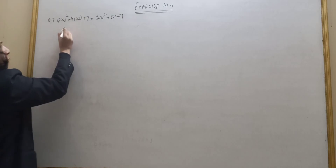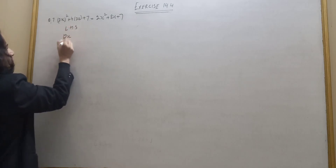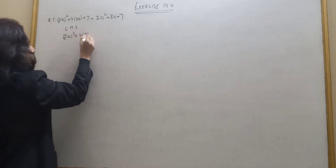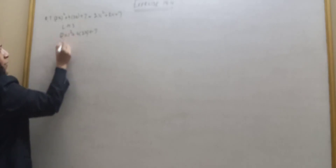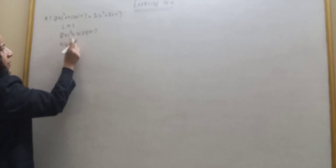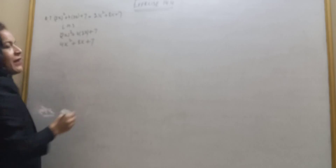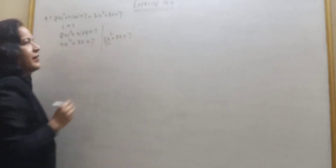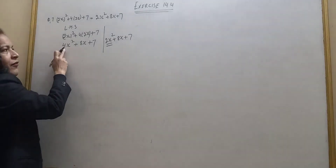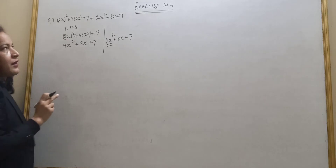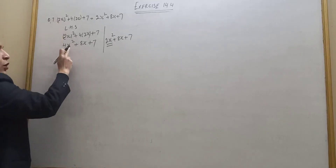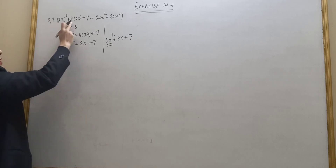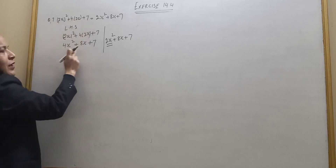Question number 7: 2x plus 4, whole squared. Left hand side is 2x plus 4, whole squared. Expanding: 2x squared is 4x², and 4 squared is 16, and 2 into 2x into 4 is... so 4 squared gives 4 into 2 equals 8x plus 7. But right hand side is 2x² plus 8x plus 7. Where is the error? It should be 4x², not 2x².